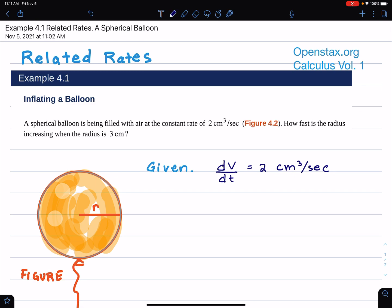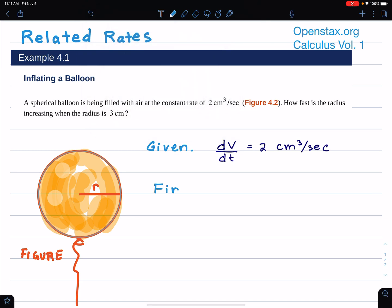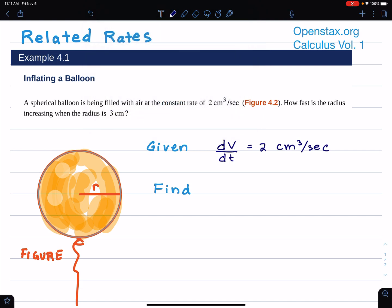Let's also write down what we're trying to find. We're trying to find the rate of change of the radius. In calculus language, we're going to write find dr/dt when r equals 3 centimeters. That's what we're trying to find.